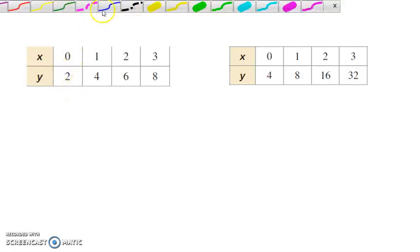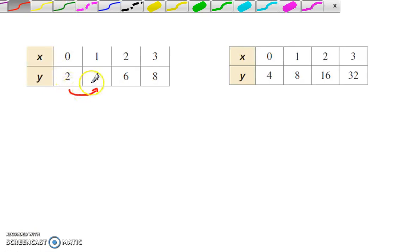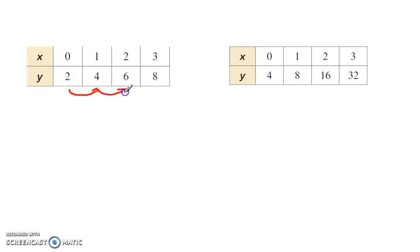So here we have these two tables, and we want to see are these relations linear or exponential. We would look and see what is happening from this term to this term. You could either say we're multiplying by 2 or we're adding 2. So we'll check the next one. 4 times 2 would give me 8, 4 plus 2 would give me 6. So we are adding 2 each time. So this relation is linear.